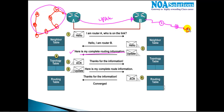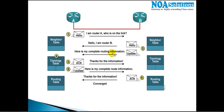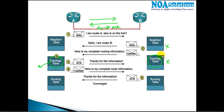The same thing happens on the other side — Router B is also connected to some networks, and it propagates all that information to its neighbor. Both routers send an update, receive an update, and then send an acknowledgement. Based on this exchanged information, they build another table called the topology table, which contains all the best routes learned from each neighbor.